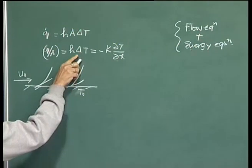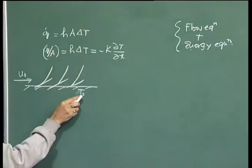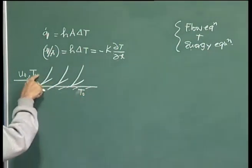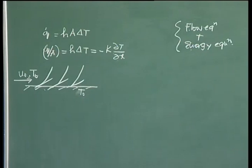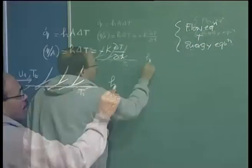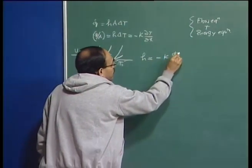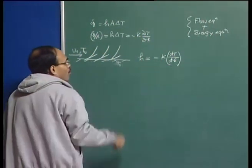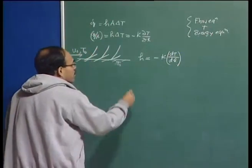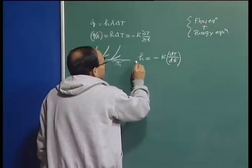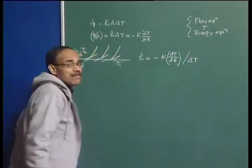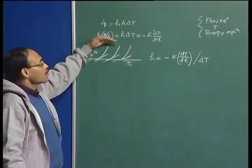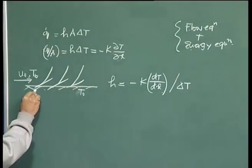Based on this temperature profile, you should be able to find out the slope of the line. Once you know the slope of the line, knowing the differential temperature — the plate temperature and the bulk temperature T_b — you know the driving force and should be able to calculate the heat transfer coefficient.